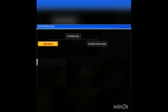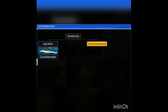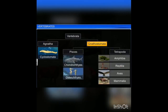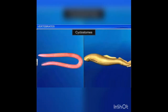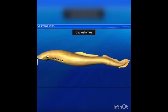Agnatha includes jawless fish-like vertebrates whereas Gnathostomata includes jawed vertebrates. Agnatha includes one important class called Cyclostomata whereas Gnathostomata includes fishes and tetrapods. Class Cyclostomata — 'cyclos' means circle, 'stomata' means mouth. All members of Cyclostomata are primitive, poikilothermic (cold-blooded), jawless aquatic vertebrates and are ectoparasites on some fishes.